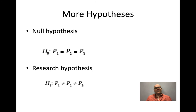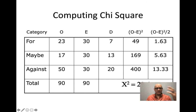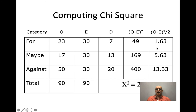The null hypothesis is that all groups are the same; the research hypothesis is that they're different. For example, looking at people who are for, maybe, or against a certain policy with 90 people: we observe 23 for, 17 maybe, and 50 against. What we'd expect if they're all the same is 30 in each group. We square the differences between observed and expected, divide by what we expect, and sum those values to get a chi-square value — in this case, 20.6.